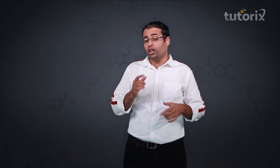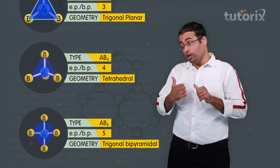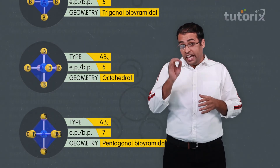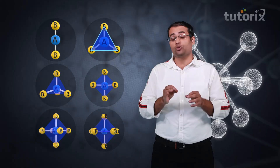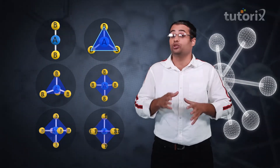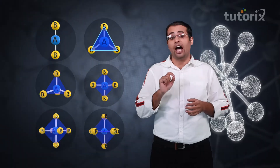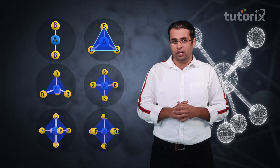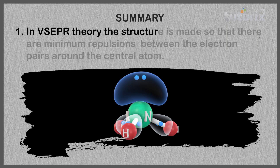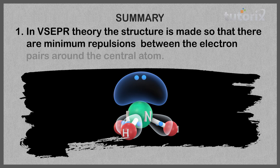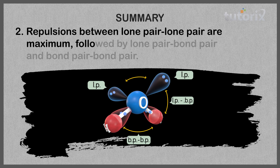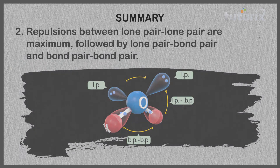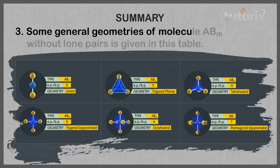In today's class, we learned what shapes or geometries molecules can have without lone pairs. In the next class, we will apply these concepts to predict the shapes of real molecules. As a quick recap: in VSEPR theory, the structure forms so that there are minimum repulsions between electron pairs around the central atom. Repulsions between lone pair–lone pair are maximum, followed by lone pair–bond pair, then bond pair–bond pair. The general geometries of molecule ABM without lone pairs are summarized in a table.